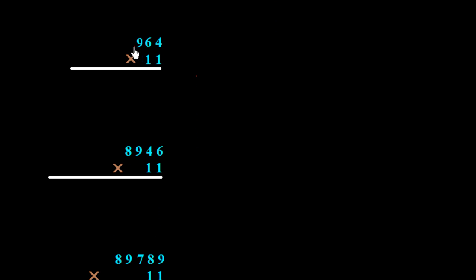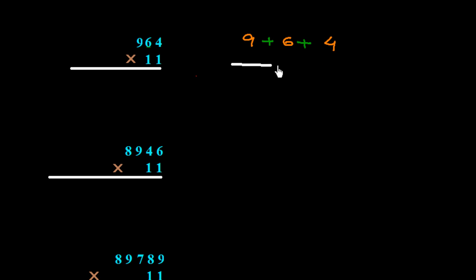Now here we have a 3-digit number in the multiplier and we have to multiply with 11. I write down this number as 9, 6, and 4, putting summation signs between them and drawing a line so you can better understand.